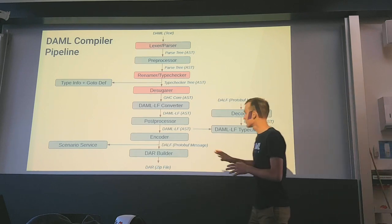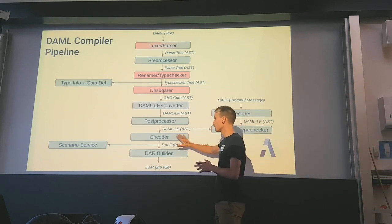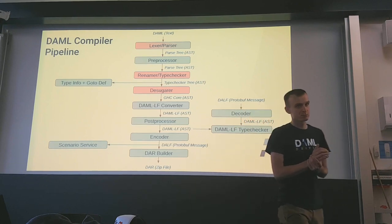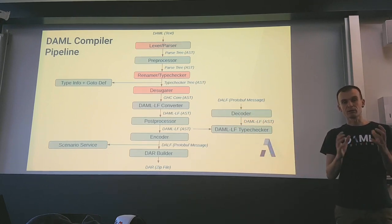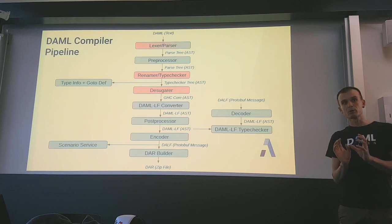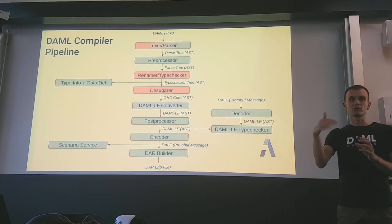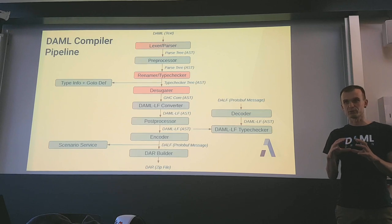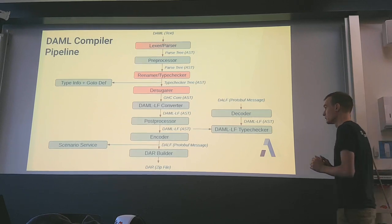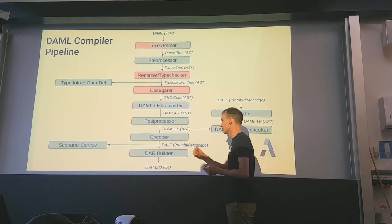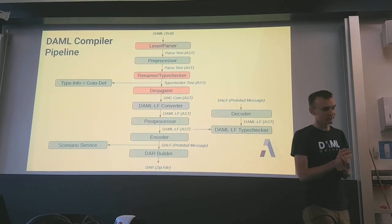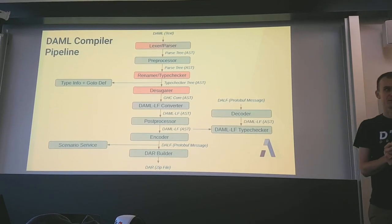Further down the pipeline, we encode everything into protobuf because we ship stuff over the network. When you upload a package to the ledger, you talk to the ledger by protobuf. Our whole AST has a protobuf description. Then we serialize and produce the DAR file — the compiler artifact.